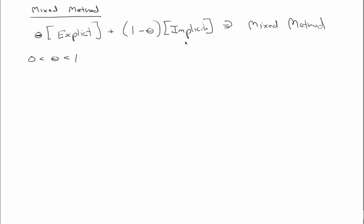And so obviously I wrote it like this just so that you can clearly see when theta is 0, then the first term cancels and you only have an implicit method. And when theta is 1, the second term cancels and you only have an explicit method. And so if we look at what actually happens when you write out the real equations and do some rearranging.